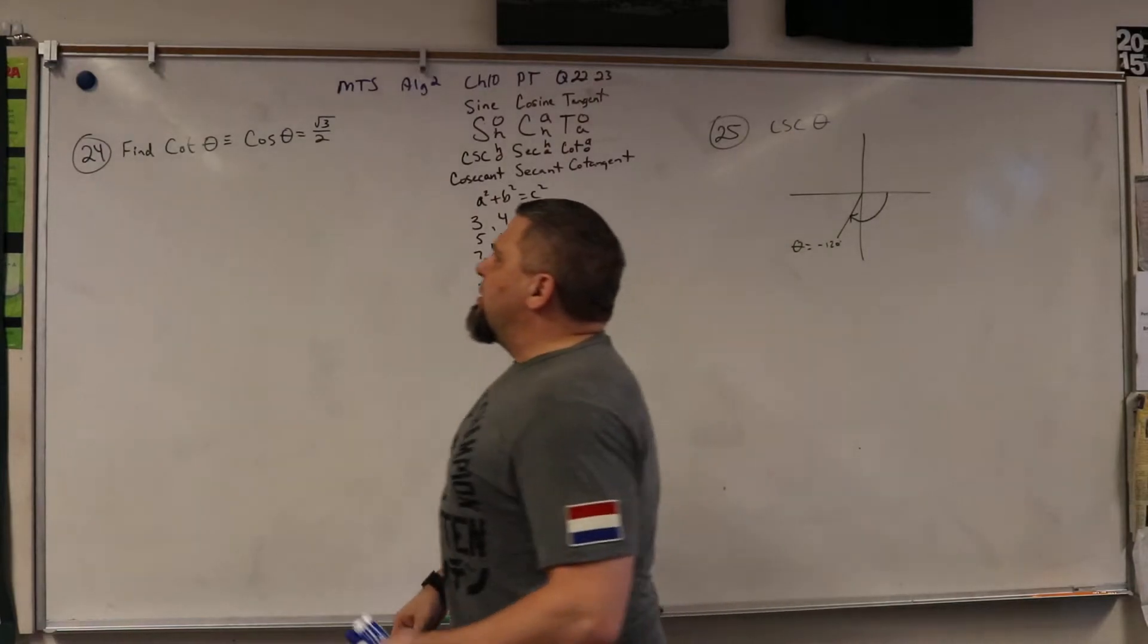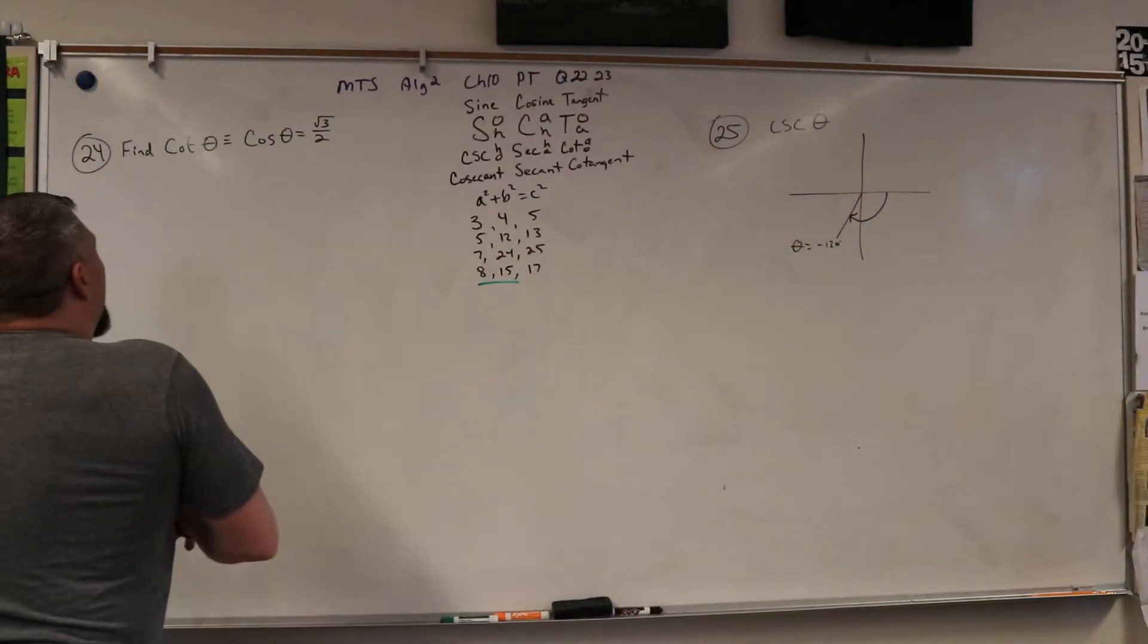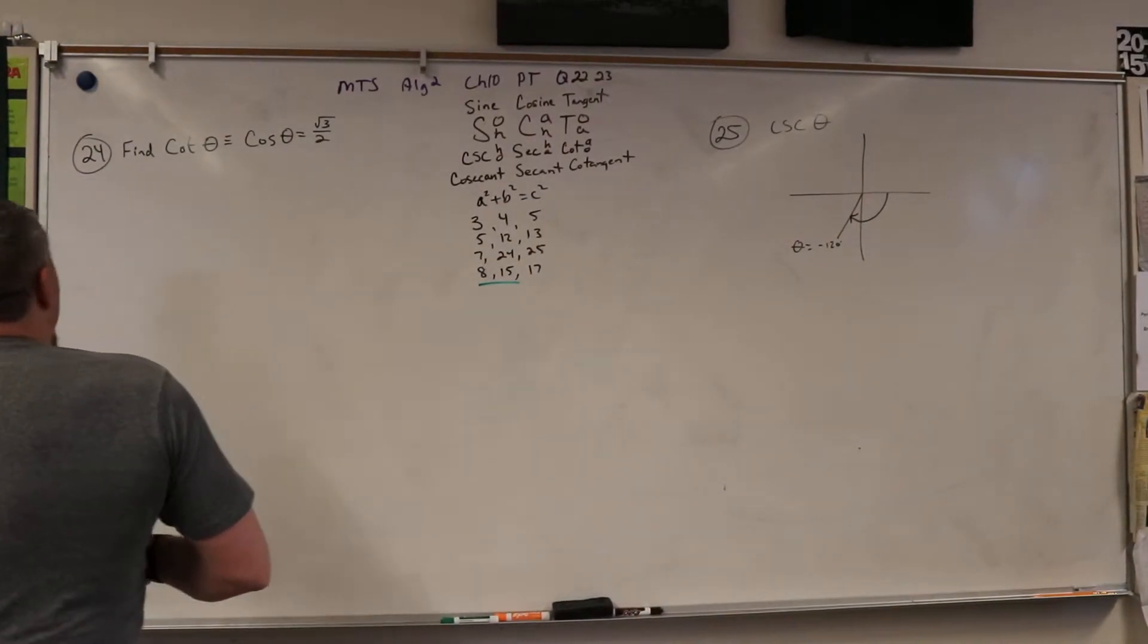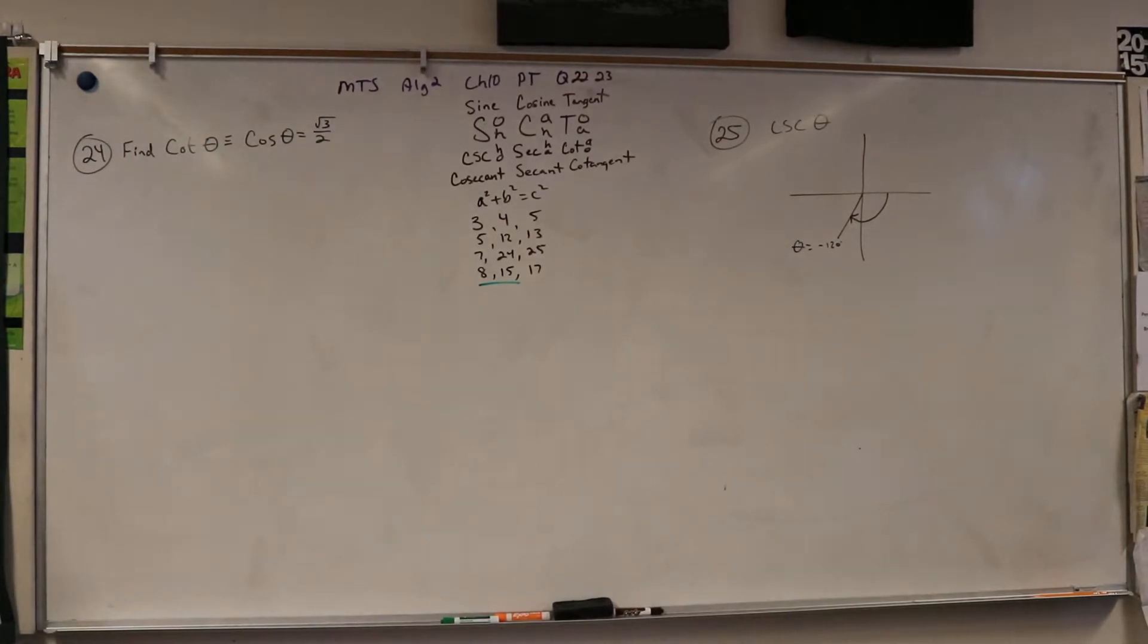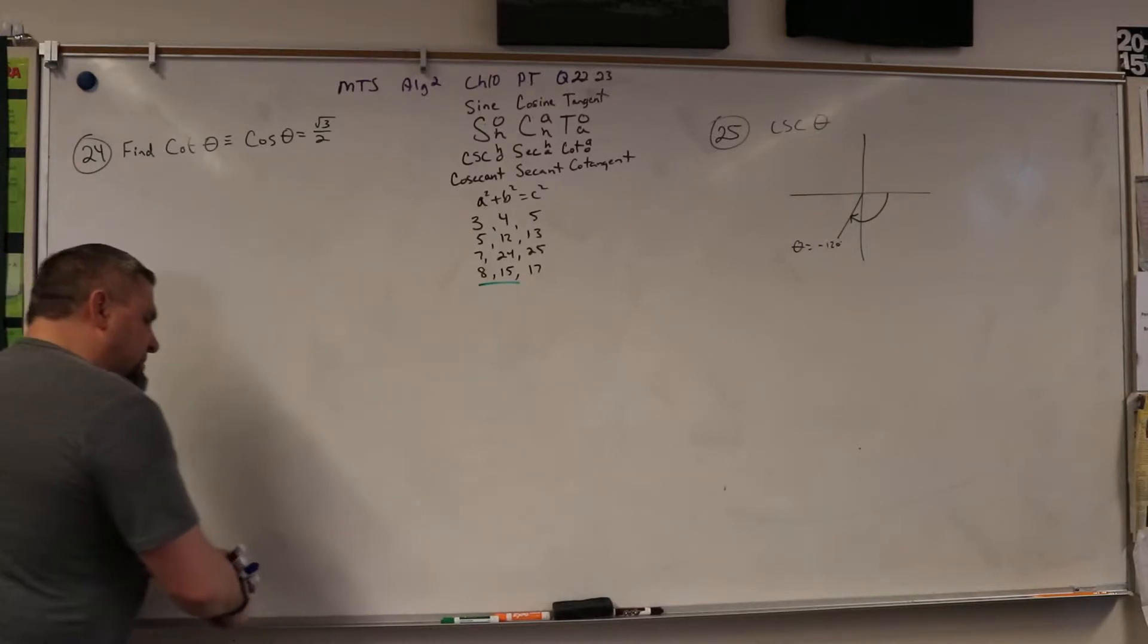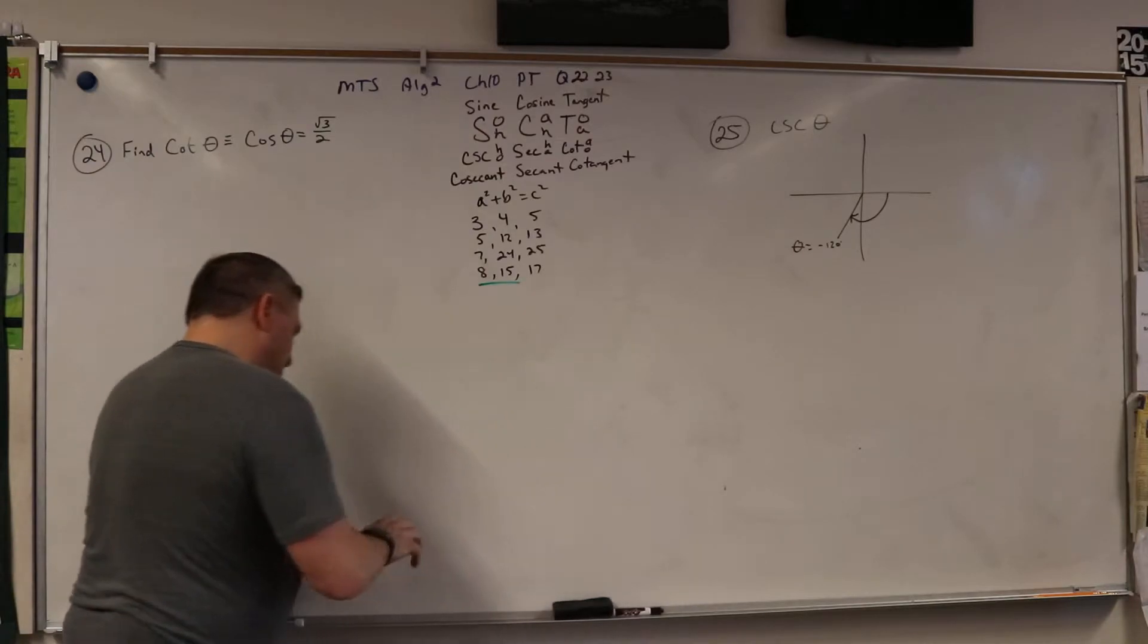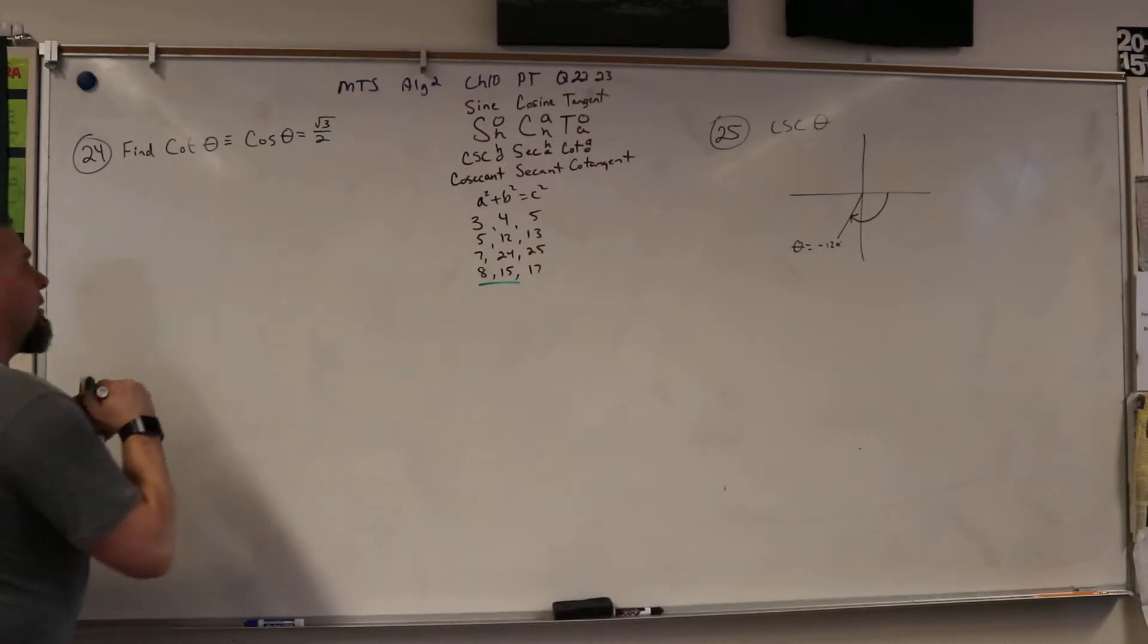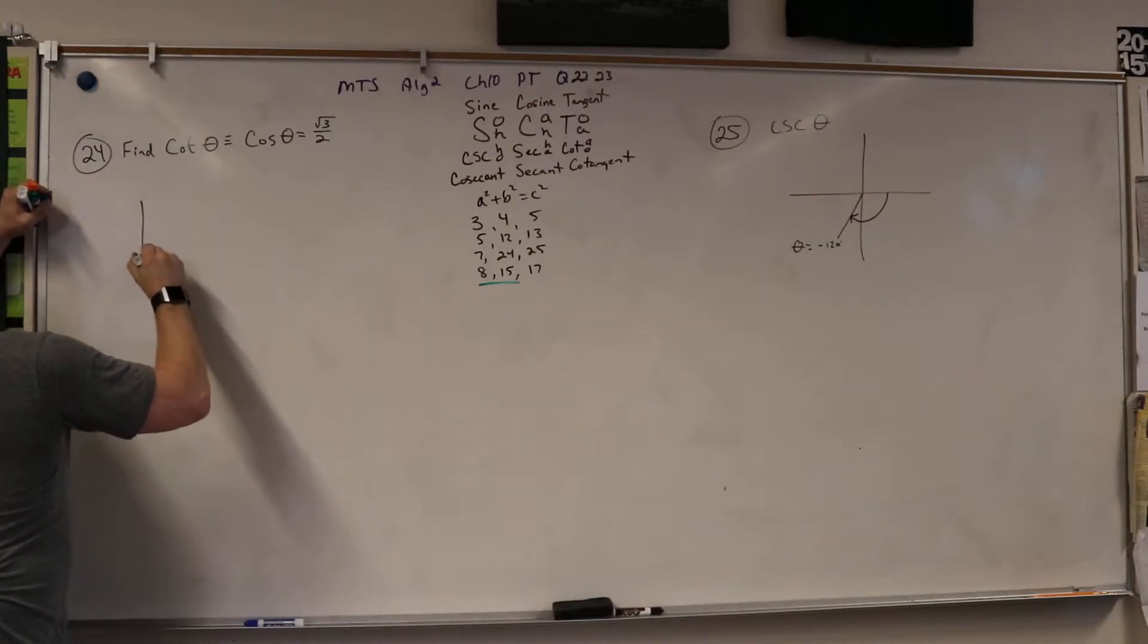Number 24. Number 24 is, let's see here, find cotangent. So again, I like to start with the triangle.